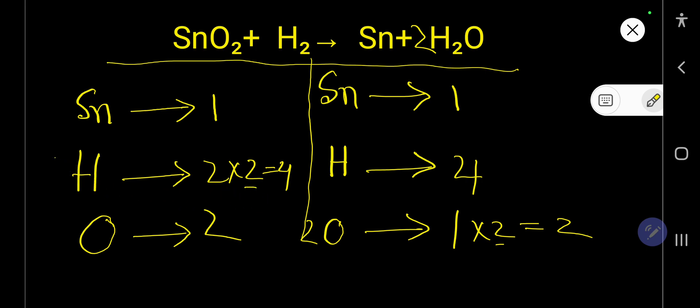So this hydrogen has come from here, so two times two is four. So look, one-one, four-four, two-two, so everything is balanced. So you can say that this is the balanced chemical equation. At last you have to use this arrow sign.